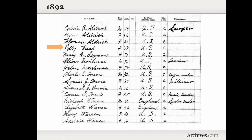Here's an example from the 1892 Census of New York State. It's a very basic census, and unfortunately it does not include any relationships. So we don't know how Calvin, Mary, and Florence Aldrich are all related. There also aren't any indications about where a household begins and ends. So Polly Mead, shown here with the orange arrow, we don't know who she's living with. Is she living with the Aldrich family? Is she living with Mary Seymour? Are Mary and Polly living together with the Moore houses? We just don't know exactly how these households are arranged.